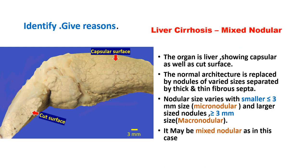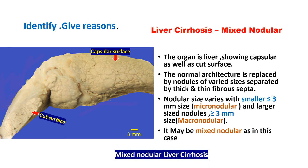The diagnosis is liver cirrhosis, specifically designated as mixed nodular liver cirrhosis. Remember: if nodules are 3 mm or smaller in size, they are called micronodules. If the nodule size is more than 3 mm, they are macronodules. In this case you can see both micronodules and macronodules, so the diagnosis is mixed nodular liver cirrhosis.